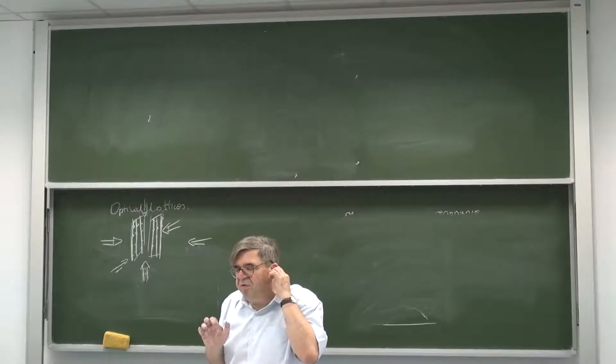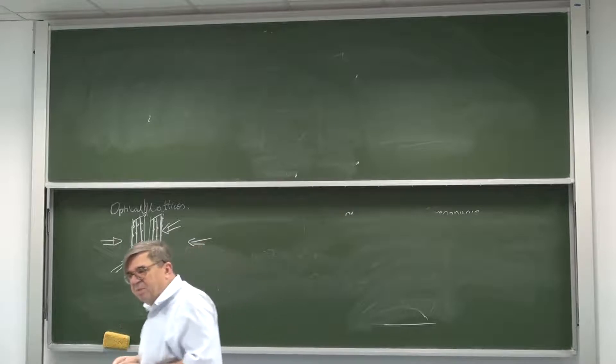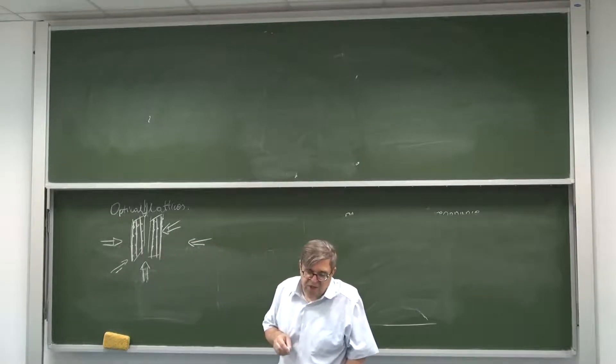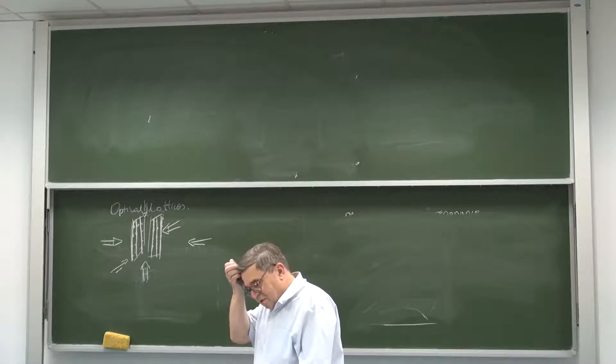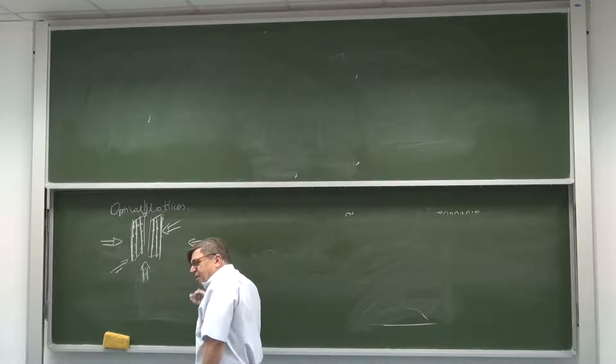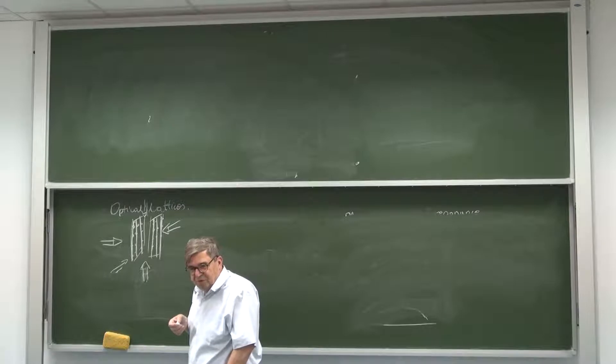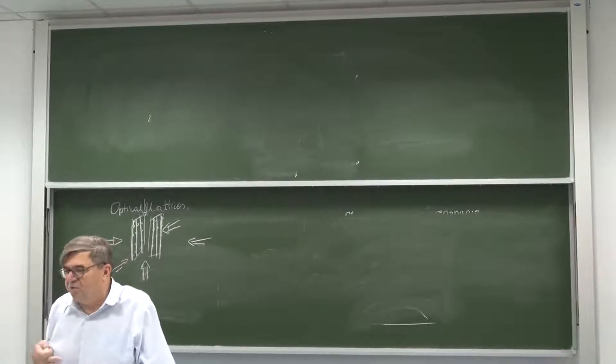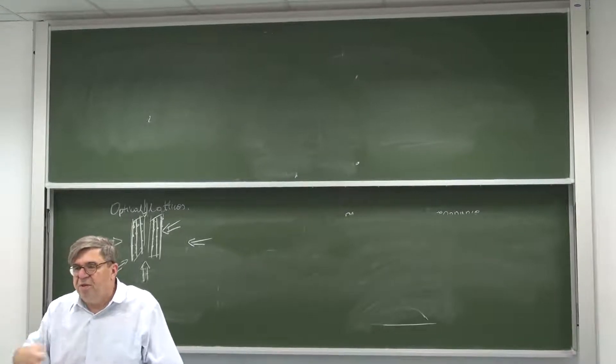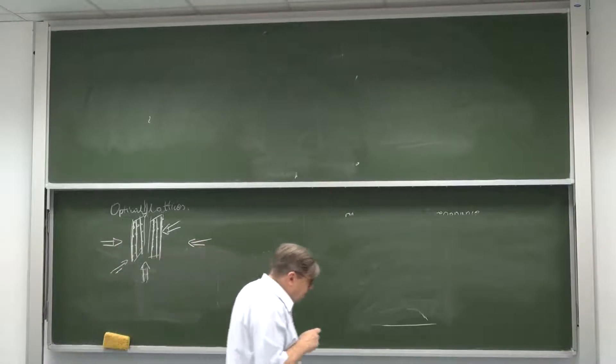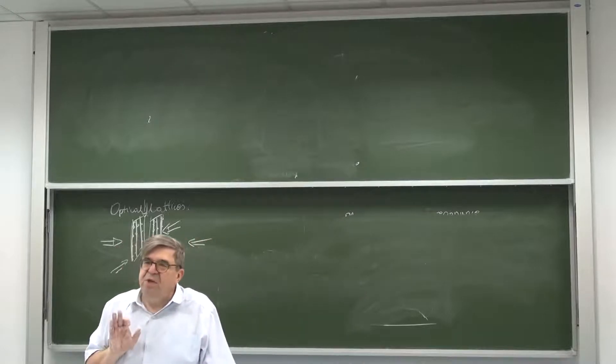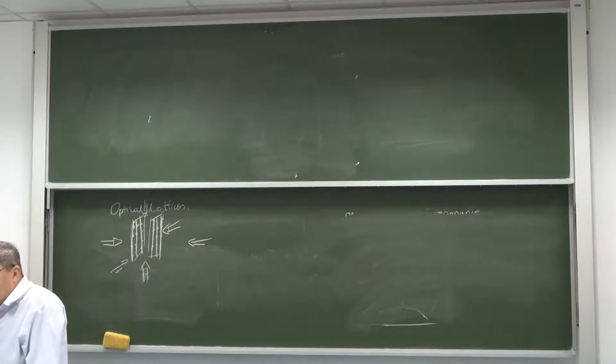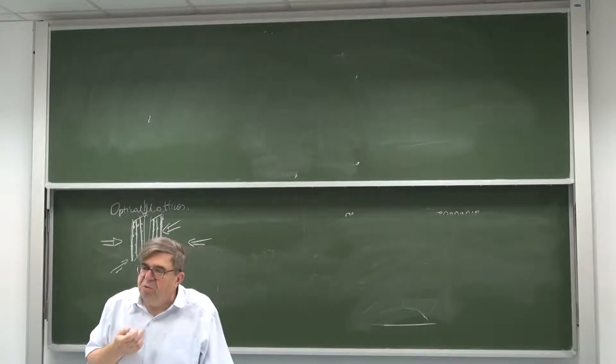Sometimes you form BEC first and then on BEC you form this periodic lattice and the atoms are trapped. Then you have some periodic arrangement. This way, in the lecture called by Peter Zoller Art of Optical Lattices, this subject was atomic physics meeting condensed matter physics.